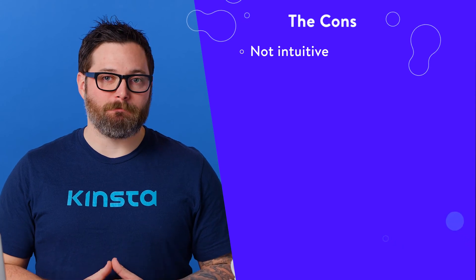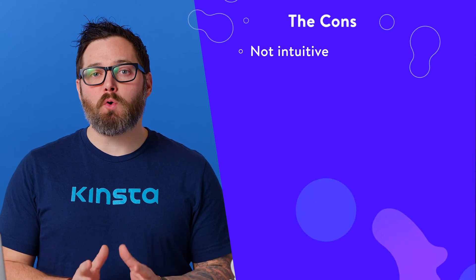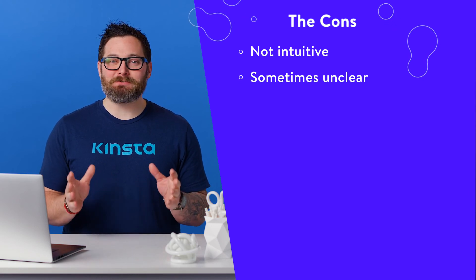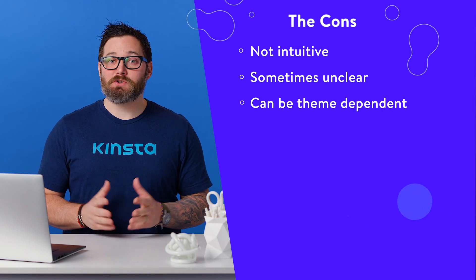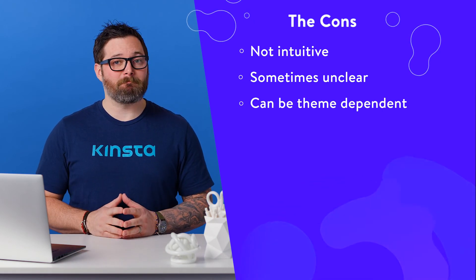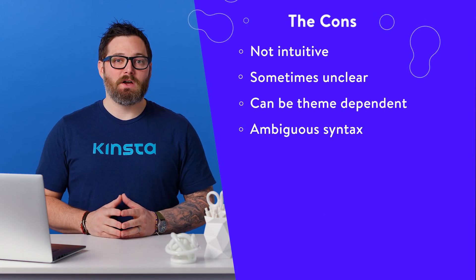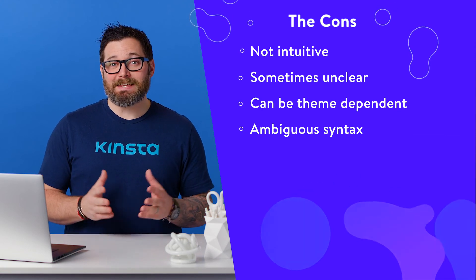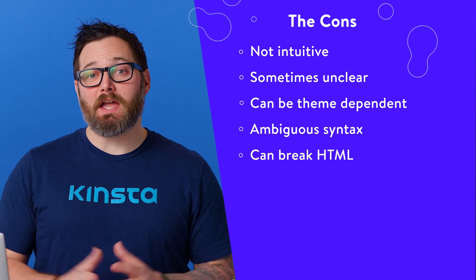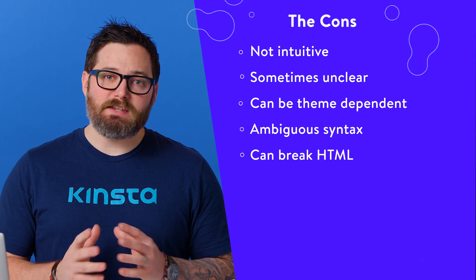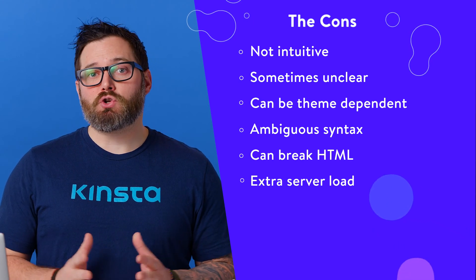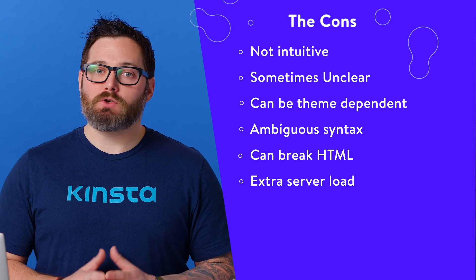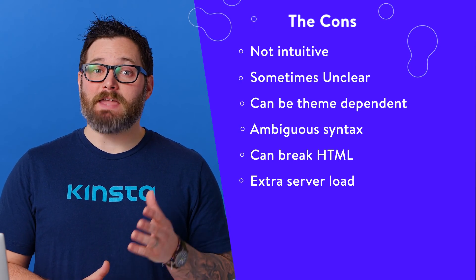Shortcodes aren't intuitive to use for the end user, especially if a lot of them are used on a page — in such cases, they're more suited for developers. It's hard to tell what a shortcode does just by looking at it; the WordPress core team has aptly named them 'mystery-meat embedded codes' for this exact reason. Shortcodes that come bundled with themes will stop working if you change your theme. Shortcodes are ambiguous regarding their syntax — for example, some support optional closing, so you can use them as self-closing, enclosing, or even nested, which can get confusing fast. Shortcodes can break HTML due to conflicting tags or interoperability issues. Shortcodes add an extra load on your server — as the number of shortcodes increases, so does this load, and too many shortcodes can bring your website to a crawl.